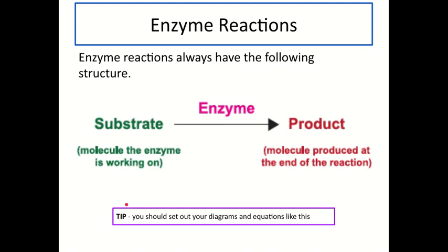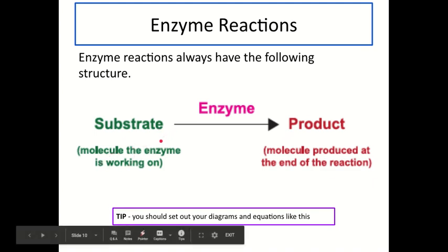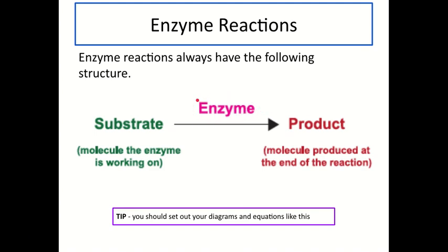We're now going to look more closely at enzyme reactions. Enzyme reactions always have the following structure: substrates at the start — the molecule the enzyme works on — the enzyme above the arrow, and the products at the end. It's really important that the enzyme goes above the arrow; it does not go beside the substrate. A lot of people write substrate plus the enzyme, which is incorrect, because the enzyme remains unchanged and can be used again — it's not used up. So it goes above the arrow.